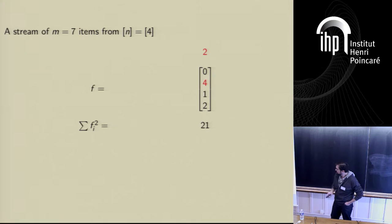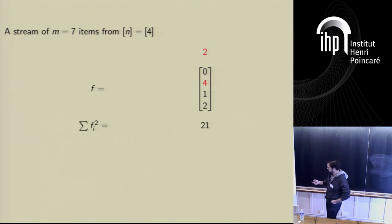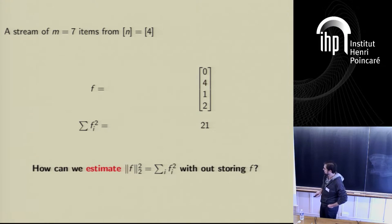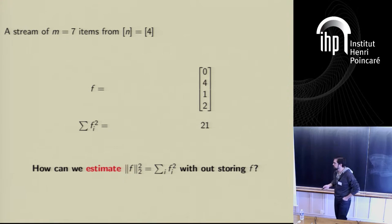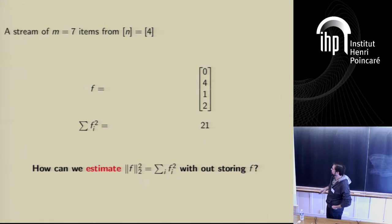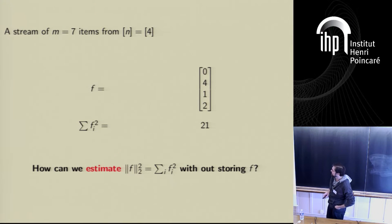Of course we can do that if we just store the entire vector, but that takes way too much space. So the question is, how can we estimate this without storing the entire vector? How can we get a small summary from which we can extract the sum of the squares?